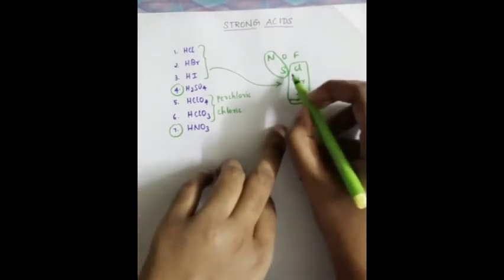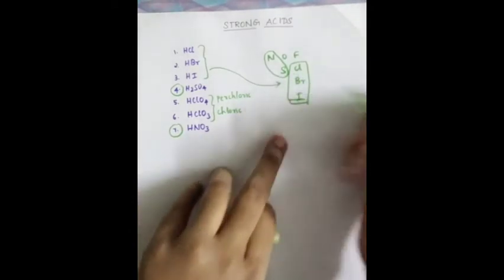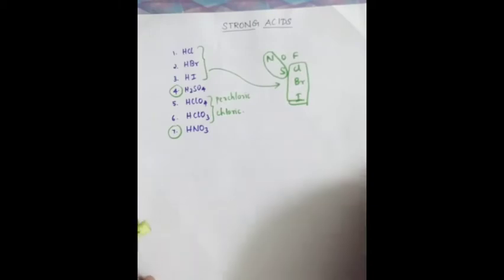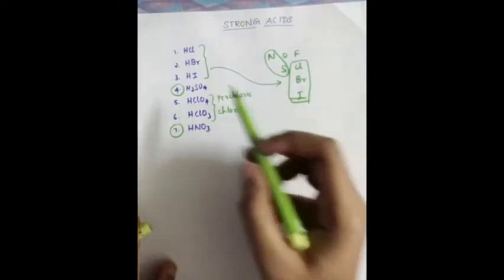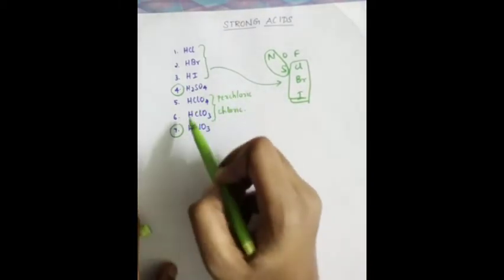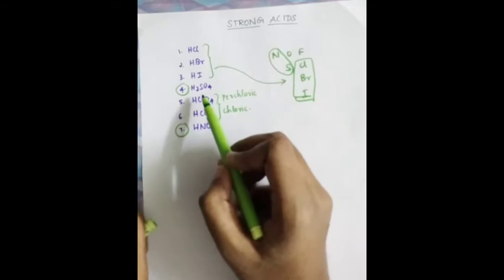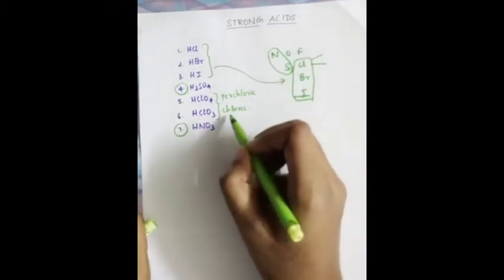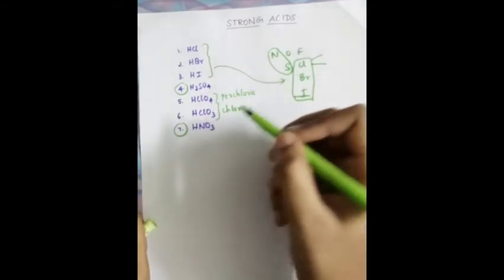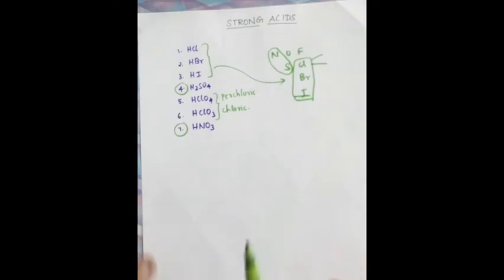From the halogens — chlorine, bromine, iodine — combining with H gives you the first 3 strong acids: hydrochloric acid, hydrobromic acid, and hydroiodic acid. Then chlorine gives 2 more acids: perchloric acid and chloric acid. Then diagonally, 2 more elements give nitric acid and sulfuric acid. That's the 7 strong acids.